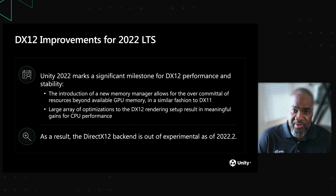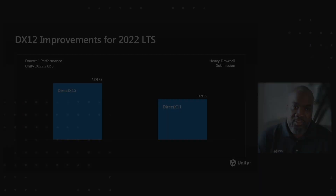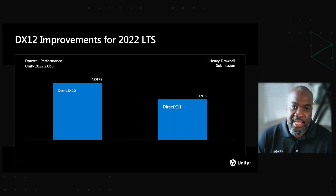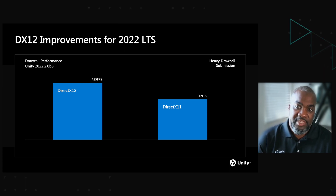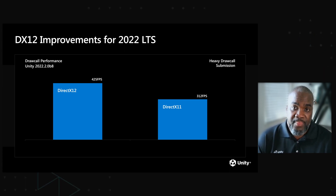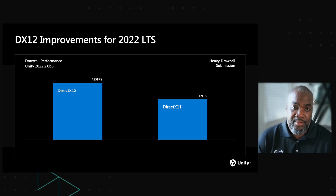So you may be wondering, what does this mean for you, and what kind of performance gains should you be expecting to see? Here you can see stats from our internal draw call performance test. You can see a significant difference between the tests running on DirectX 11 versus DirectX 12. In draw call bound scenes, you should expect a significant CPU time difference. But really, this is only the beginning.